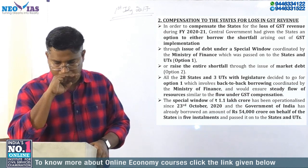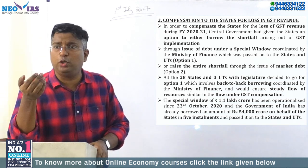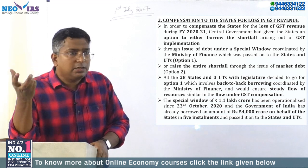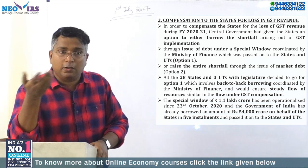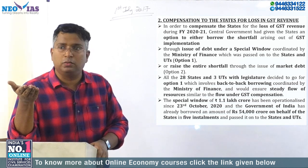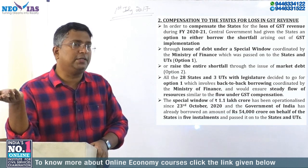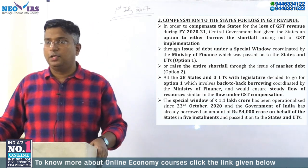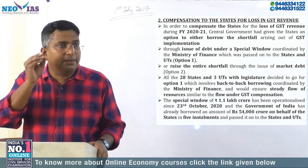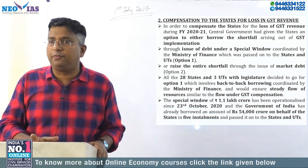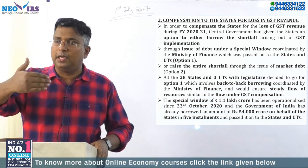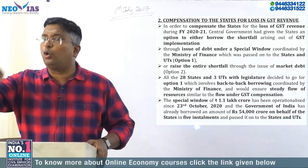When states joined GST, one of their major revenue sources — state VAT — was merged with GST. So they may fear a revenue shortfall. The center said: if there is any shortfall in your revenue by joining, we will compensate you. They created a formula to calculate this shortfall in GST revenue. The law itself says there is a base year, and based on that base year, revenue projections are made.